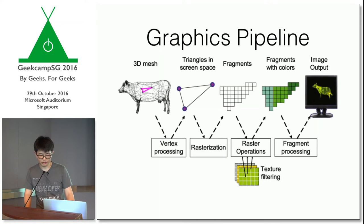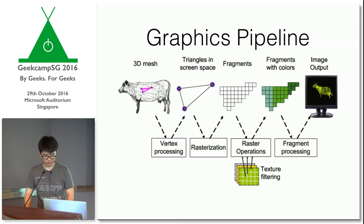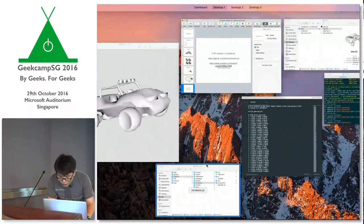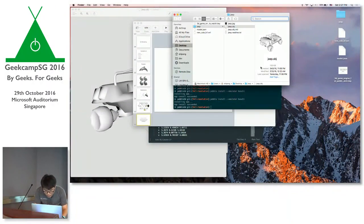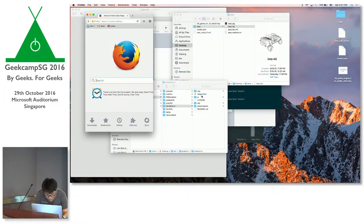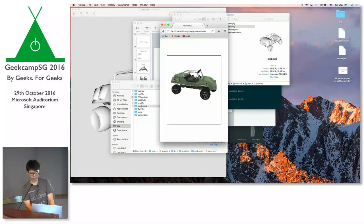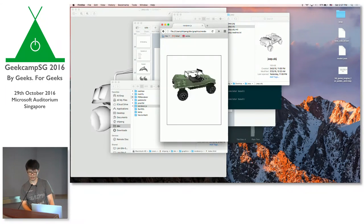For the texture part, I didn't include it in this demo because Pebble watch only supports 64 colors, which is not so colorful. But I have a demo with textures using JavaScript from a previous JS talk that was recorded by Engineers.sg — if you're interested, you can check that link out. The size there is actually the same as Pebble watch, but I added texture so it looks better. Ultimately, it's the same thing I have on the watch.